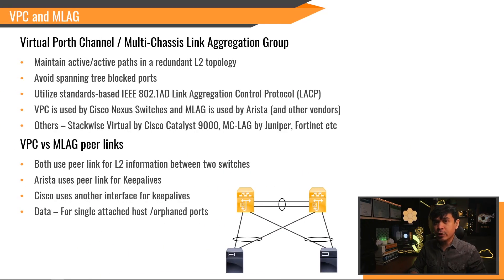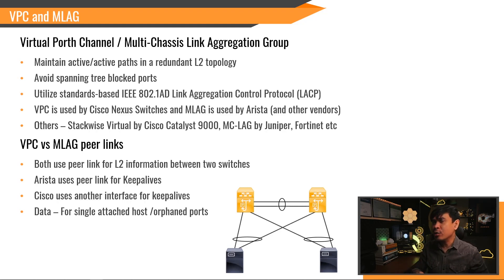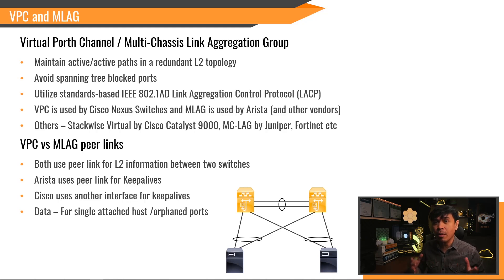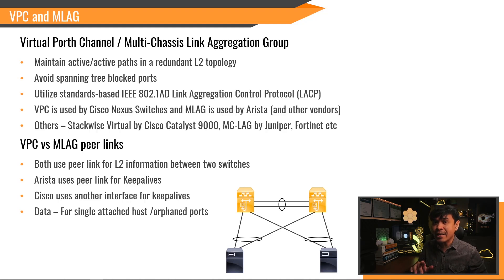Virtual Port Channel — VPC — and Multi-Chassis Link Aggregation Group — MLAG. The concept of both VPC and MLAG is to maintain an active-active path in a redundant Layer 2 topology. It can actually be Layer 3 if we use FHRP, such as HSRP, VRRP, and many more. The goal is to avoid Spanning Tree blocked ports by converting a loop topology into a redundant topology. We utilize the standard-based IEEE 802.1AD, also known as Link Aggregation Control Protocol, or LACP.